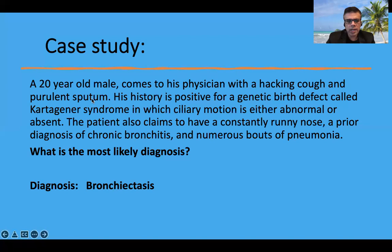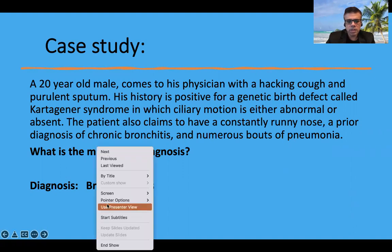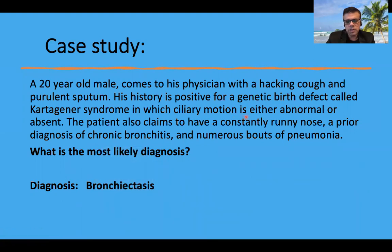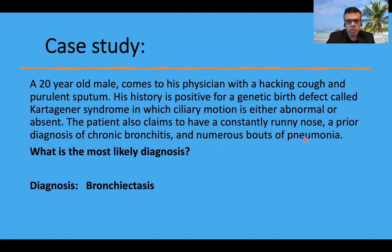A 20-year-old male comes to his physician with a hackling cough and purulent sputum. His history is positive for a genetic birth defect — Kartagener syndrome — in which ciliary motion is either abnormal or absent. The patient also claims to have a constantly runny nose, a prior diagnosis of chronic bronchitis, and numerous bouts of pneumonia. The most likely diagnosis, given these keywords, is bronchiectasis.